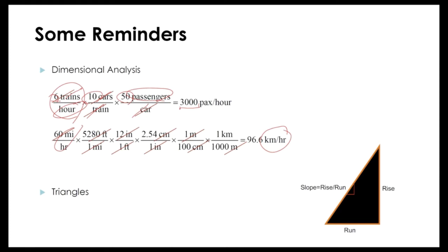We can easily convert units by crossing things out — meters cancel, centimeters cancel, inches cancel, feet cancel, miles cancel — and we end up with kilometers per hour. Multiplying 60 by 5,280, by 12, by 2.54, divided by 100, divided by 1,000 gives 96.6 kilometers per hour. Always do dimensional analysis when working with traffic data.